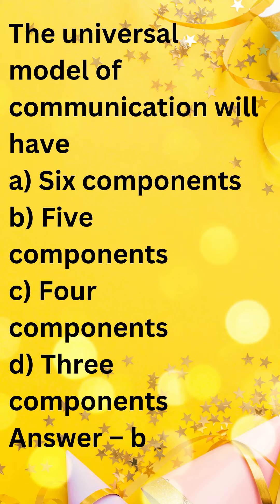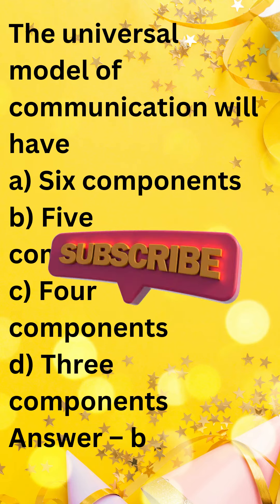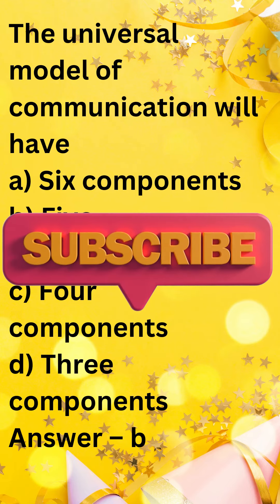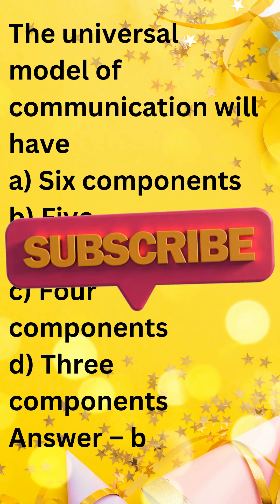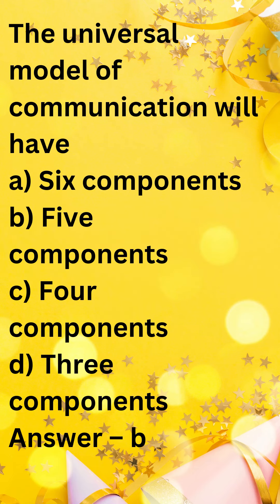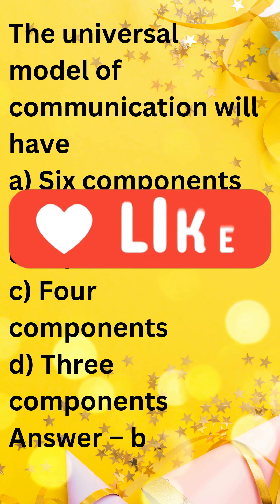1. Information Source — This is where the message originates, like a person talking or a computer sending data. 2. Transmitter — This component encodes the message into a signal that can be transmitted through a channel. For example, your voice is encoded into electrical signals when you talk on the phone.